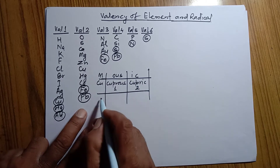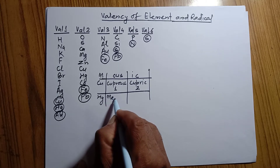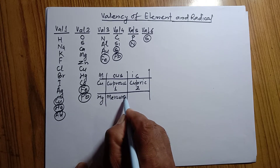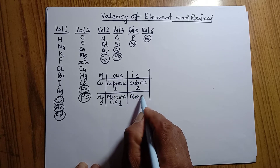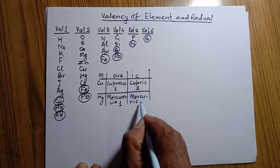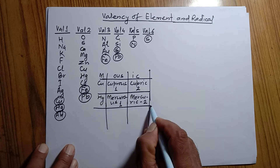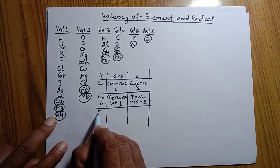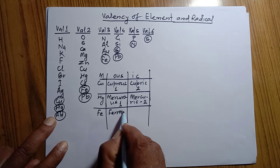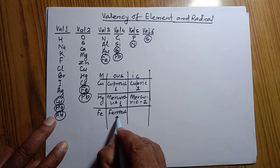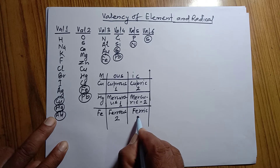In the same way, there is variable valency for mercury. 'Mercurous' (M-E-R-C-U-R-O-U-S) means valency 1, but 'mercuric' (M-E-R-C-U-R-I-C) means valency 2. Similarly, iron — when written as 'ferrous' (F-E-R-R-O-U-S), its valency is 2. When written as 'ferric' (F-E-R-R-I-C), its valency is 3.